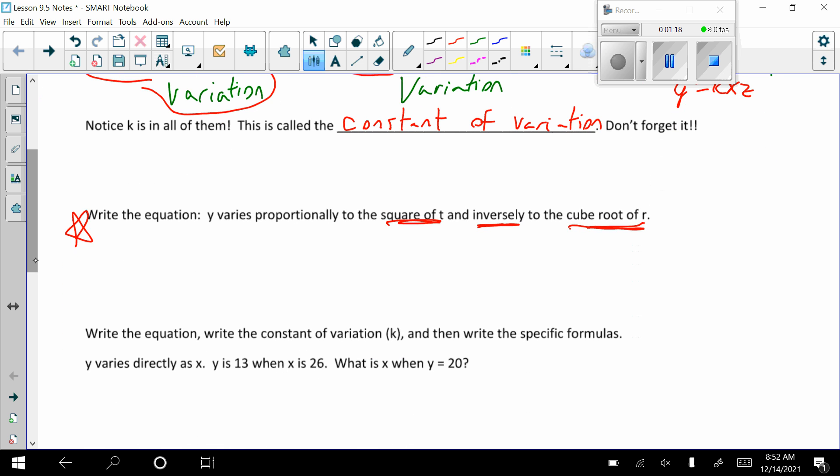And then we're always going to include the K. So Y equals K, varies proportionally to the square of t. So I'm going to include K and then the square of t. And inversely, so fraction, the cubed root of r. So the cubed root of r. So that's how we set that up.